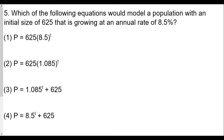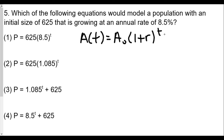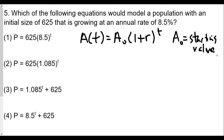The form we use here is a(t) = a₀ × (1 + r)^t, where a(0) is our starting or initial value. In this problem the starting value is 625, so a₀ = 625.